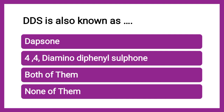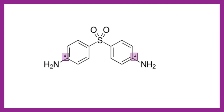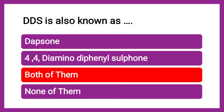Next question: DDS is also known as — dapsone, 4,4'-diaminodiphenyl sulfone, both, or none. The correct answer is both. DDS has two amino groups (diamino), two phenyl rings (diphenyl), and a sulfone group. The amino groups are at the fourth position of each phenyl ring. So DDS is diaminodiphenyl sulfone, commonly known as dapsone.